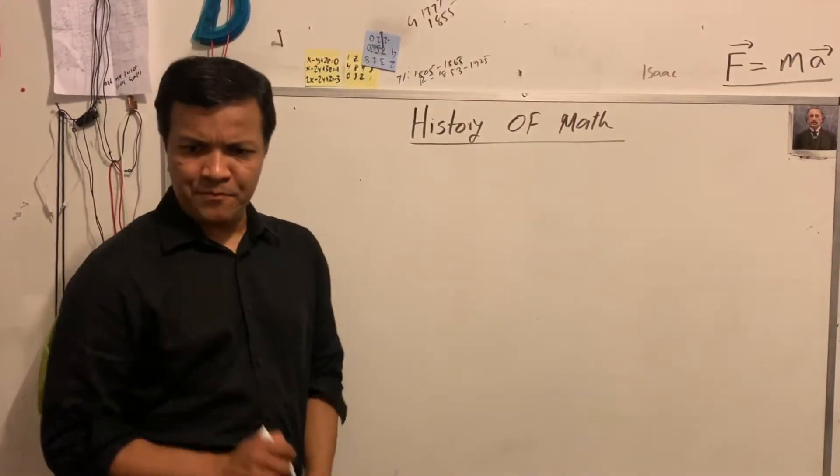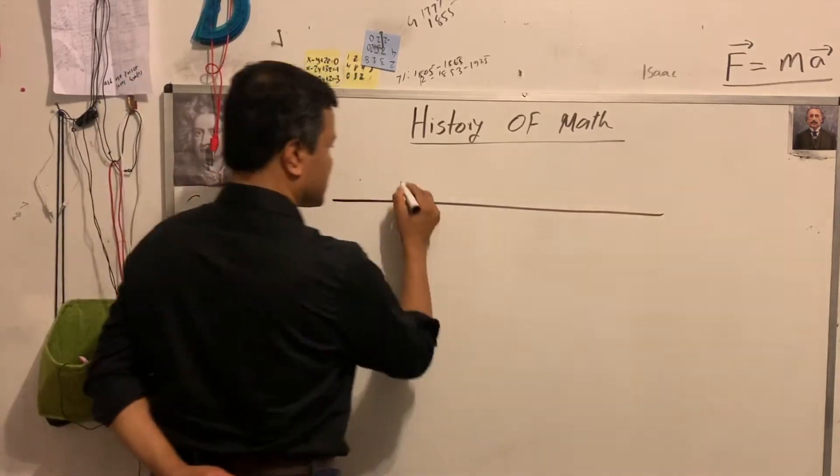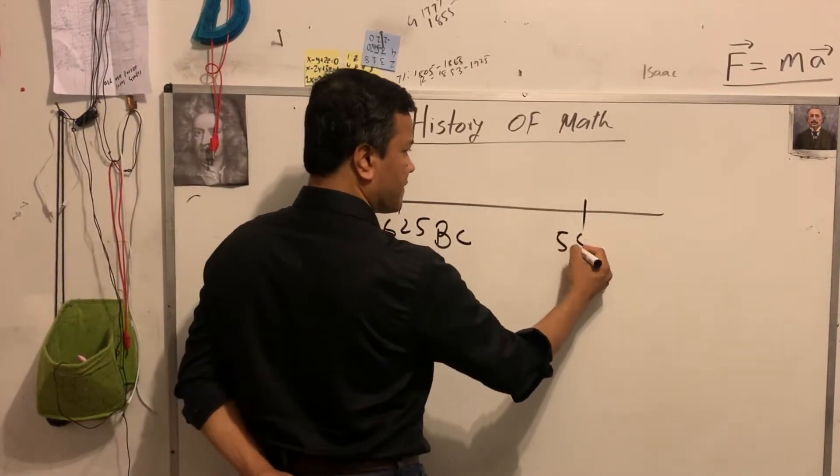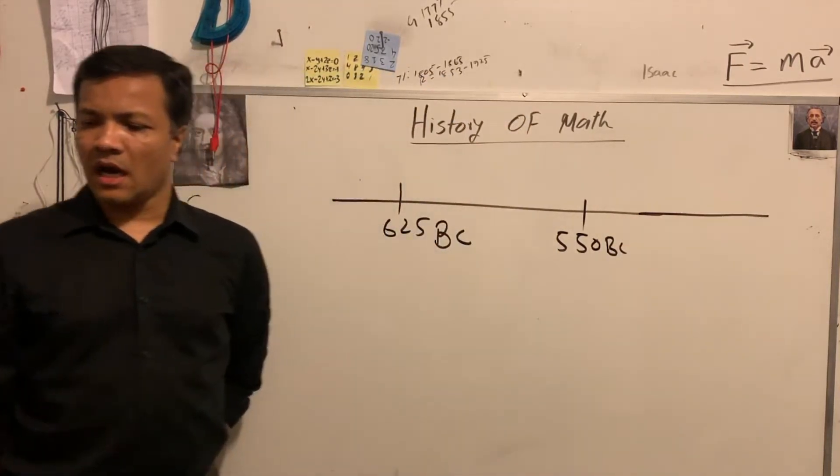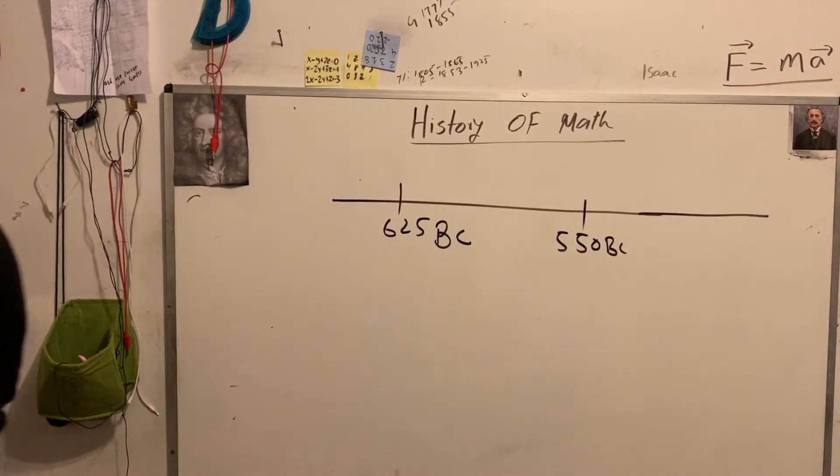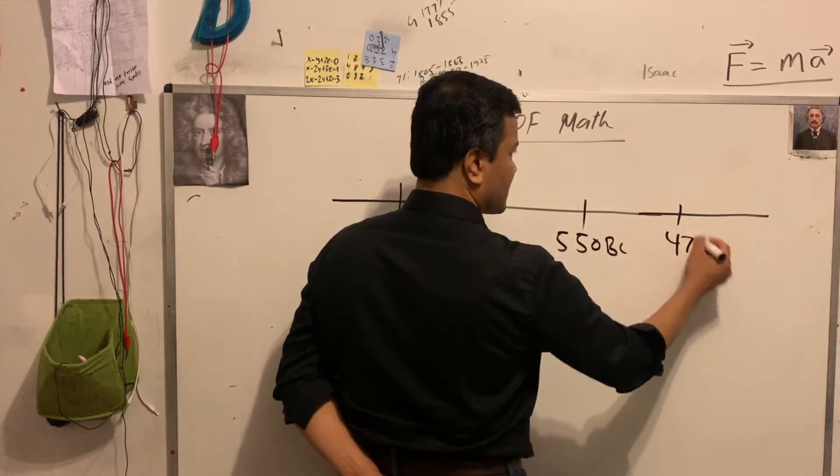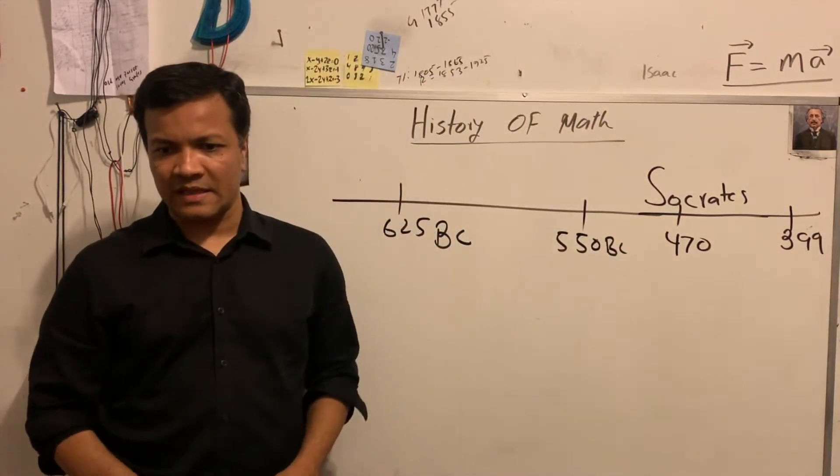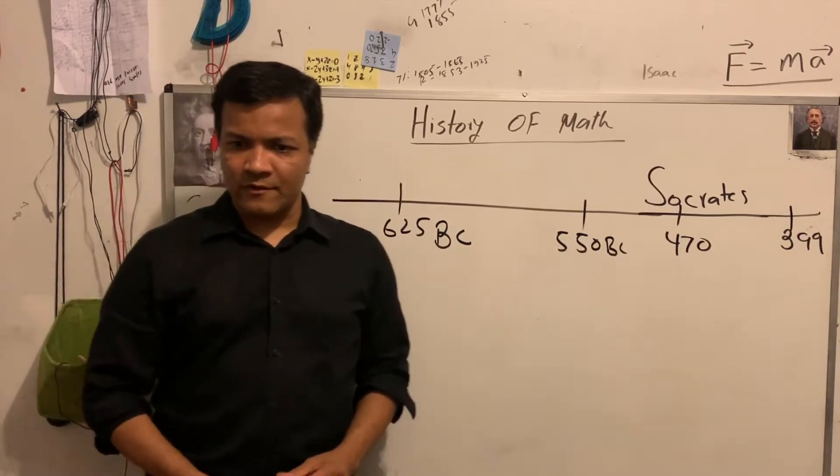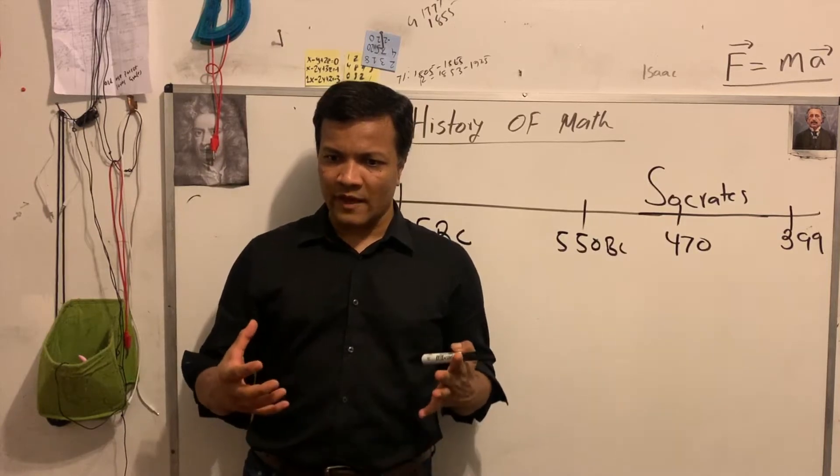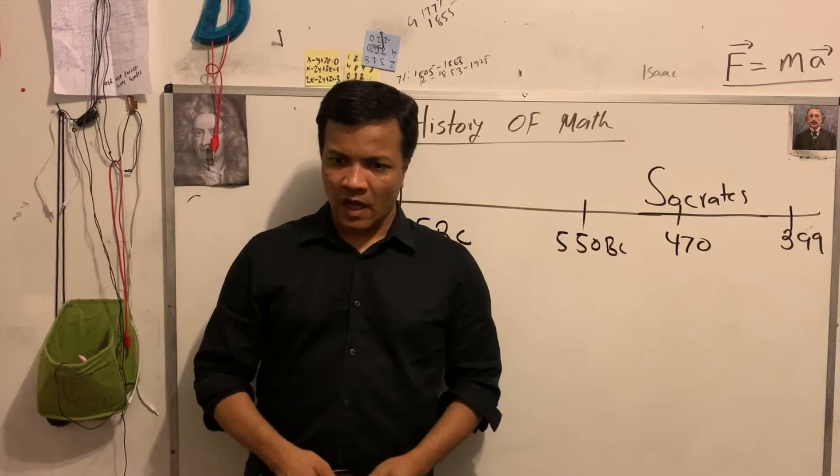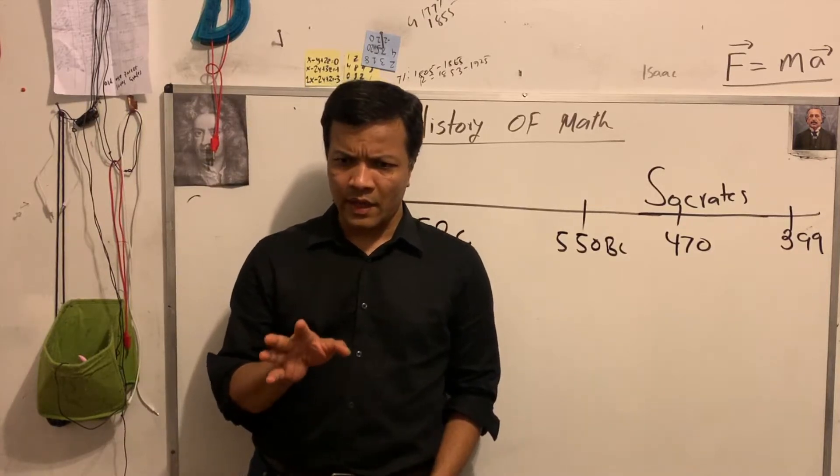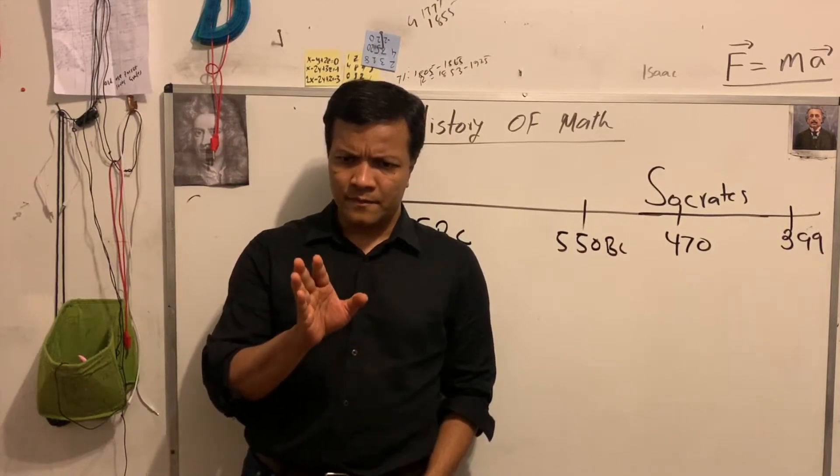Today we're going to talk about Thales. Thales was born in 625 BC and he died 550 BC. Just to give you some context of his life span. Socrates was born 470, died 399. Socrates lived 71 years. So why are we talking about Thales? Because he is known as the father of mathematics. But before we get there, we just want to remind you why he is regarded as the pioneer of mathematics.